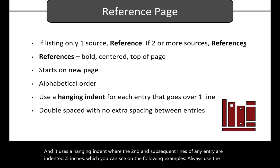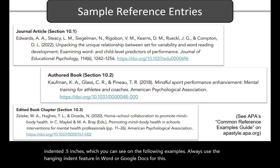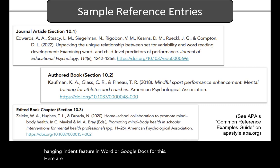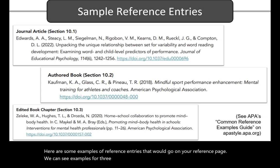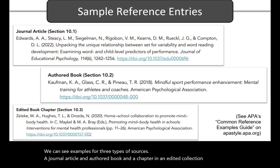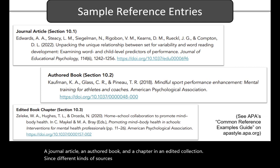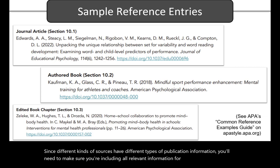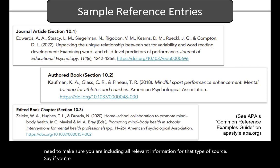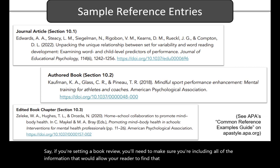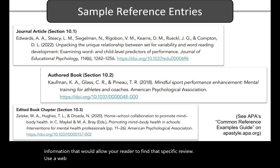Here are some examples of reference entries that would go on your reference page. We can see examples for three types of sources: a journal article, an authored book, and a chapter in an edited collection. Since different kinds of sources have different types of publication information, you'll need to make sure you are including all relevant information for that type of source. For example, if you're citing a book review, you'll need to make sure you're including all of the information that would allow your reader to find that specific review. Use a website like the Purdue OWL or the APA style guides for help citing different kinds of sources.